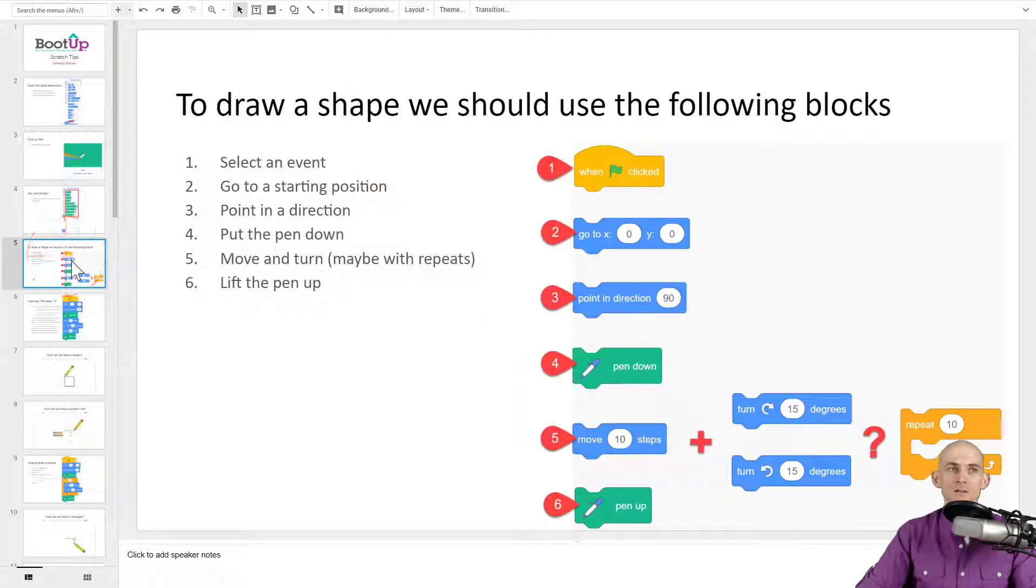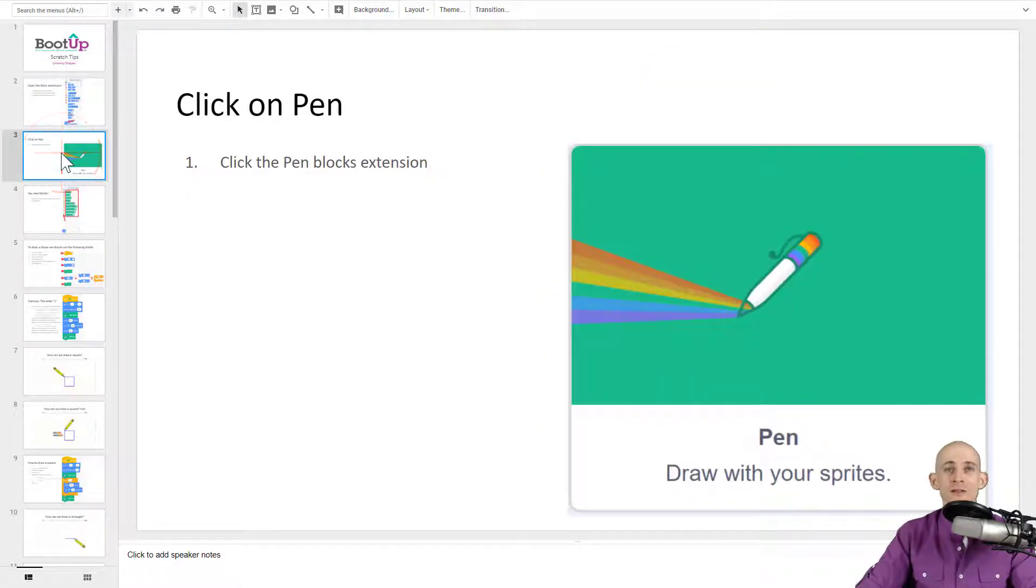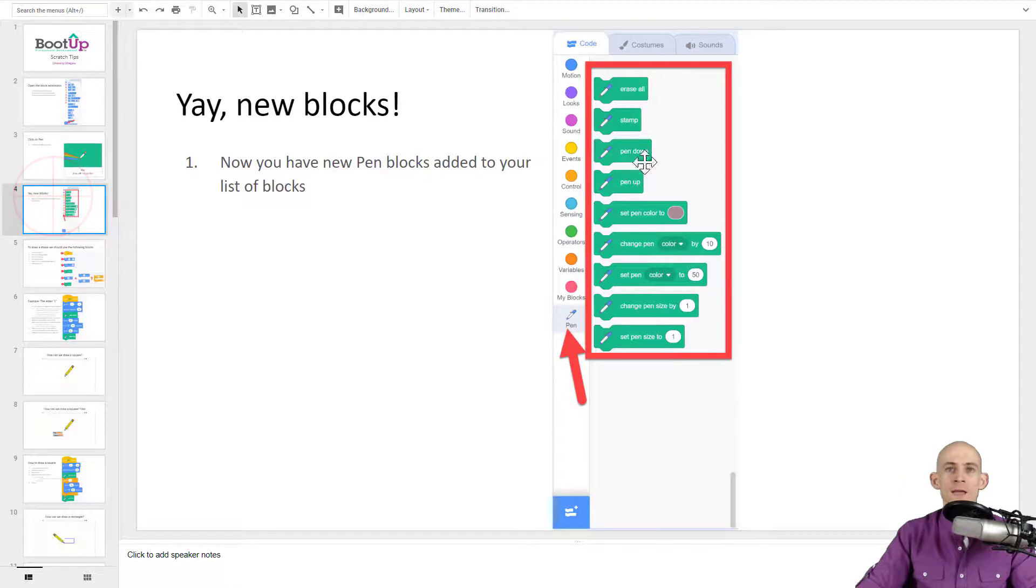But that doesn't occur until slide five. The reason why is because I've added in some things that show you how to like open the extensions, to click on the pen tab, and then yay, we got some new blocks.